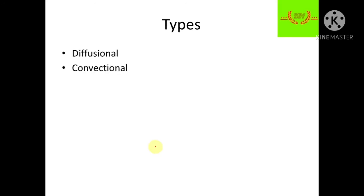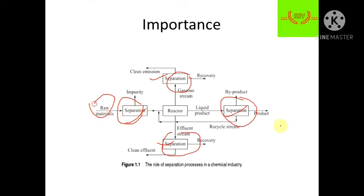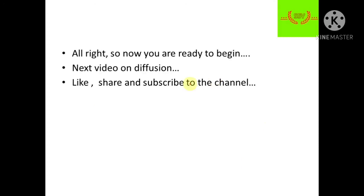Thank you for watching the video. Mass transfer is important because all these separation steps involve mass transfer — without it, raw materials cannot be converted to products. Mass transfer is the most important subject for running any chemical industry. The next video on diffusion will be uploaded soon. Until then, please subscribe, share, and like the channel, and please study well. Thank you guys.